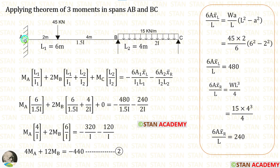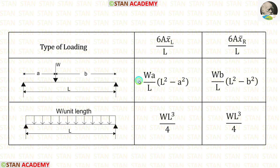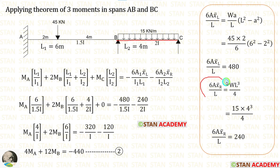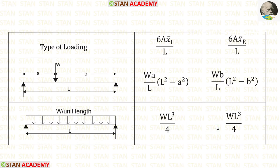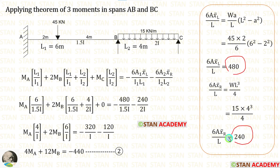Now let us apply the formulas in spans AB and BC to form equation 2. In span AB, we calculate 6A·x-bar left / L using formula WA/L × (L² − A²). With W = 45, A = 2, L = 6, we get 480. In span BC, we calculate 6A·x-bar right / L using formula WL³/4. With W = 15, L = 4, we get 240. Applying all values in the equation, we can easily make equation 2.